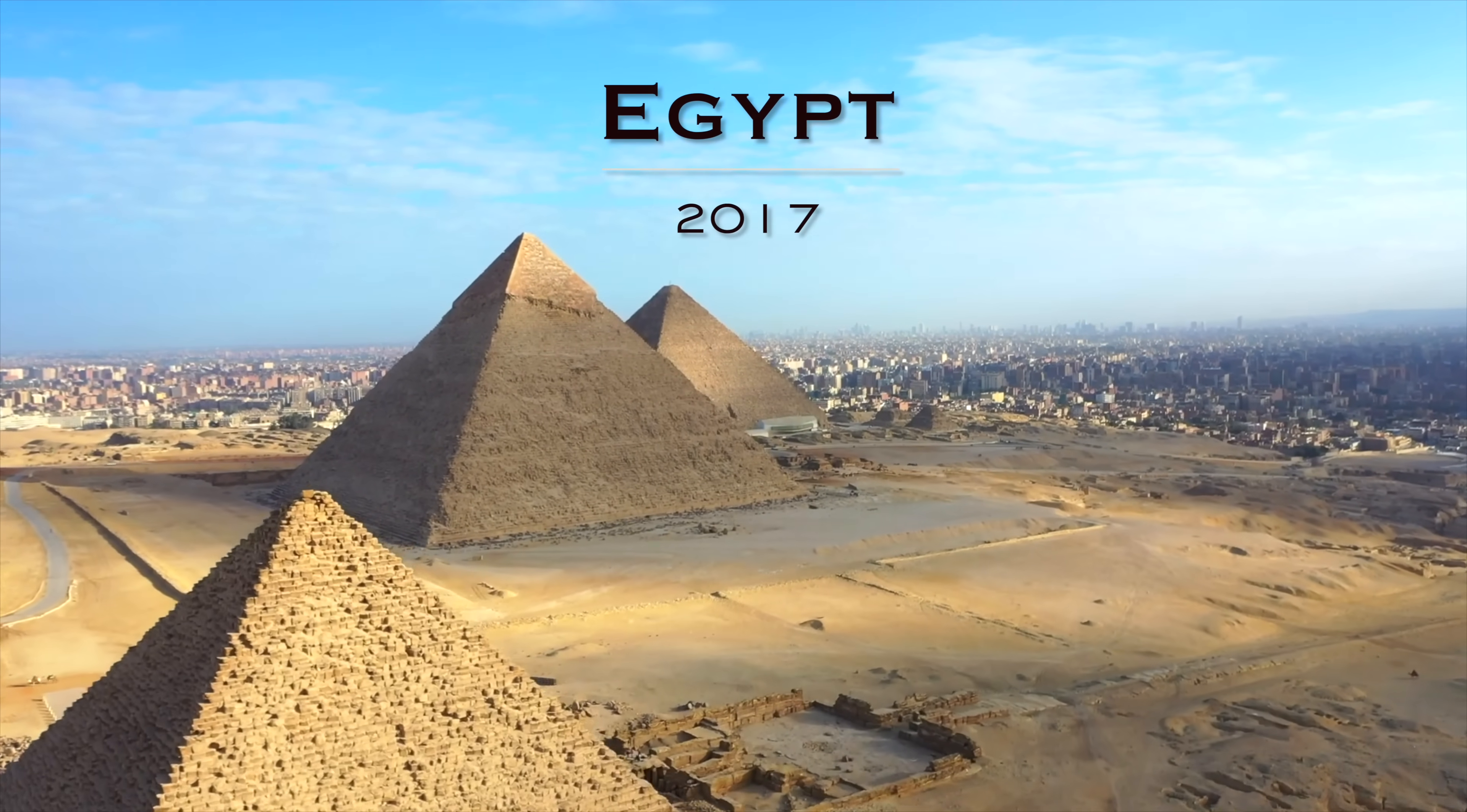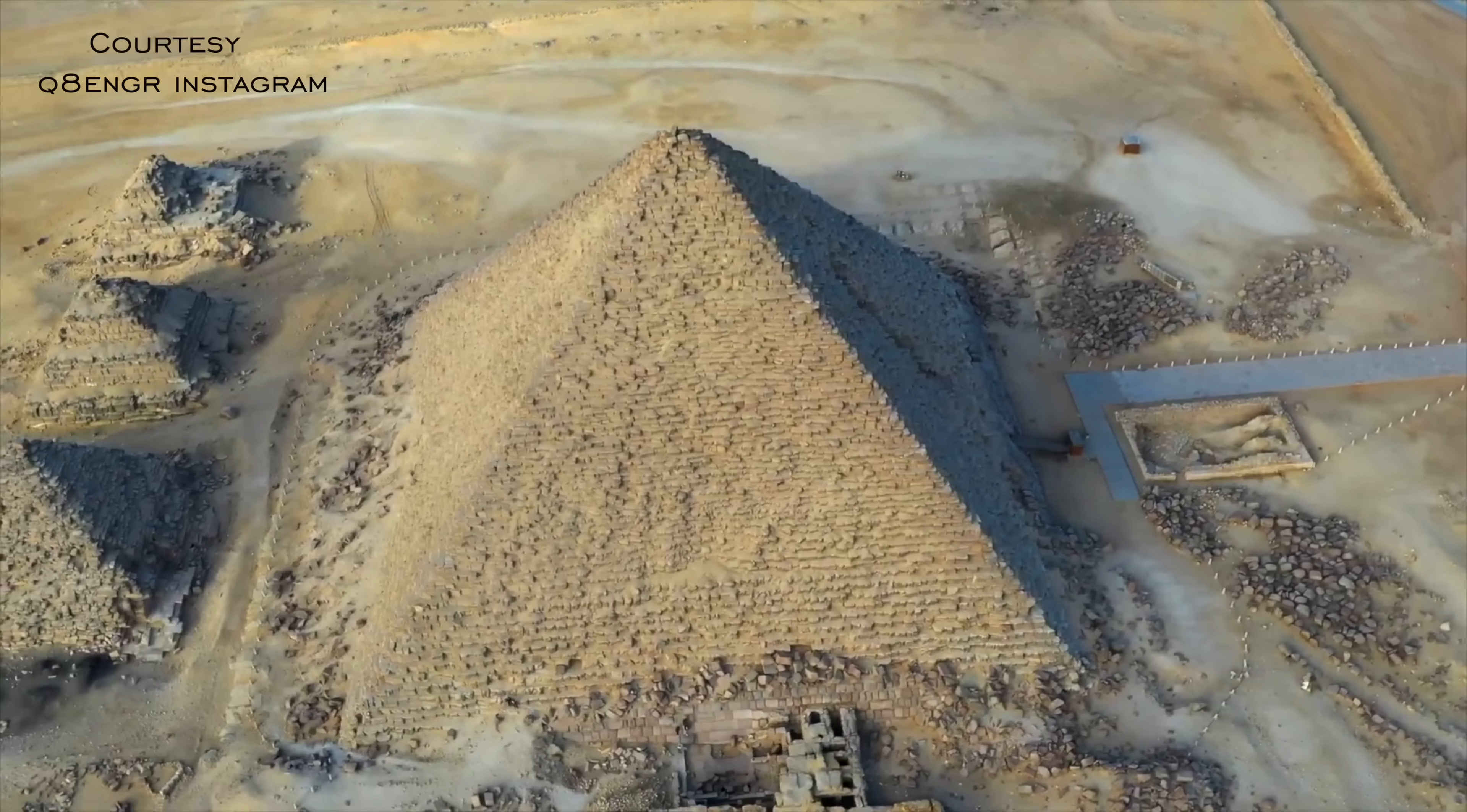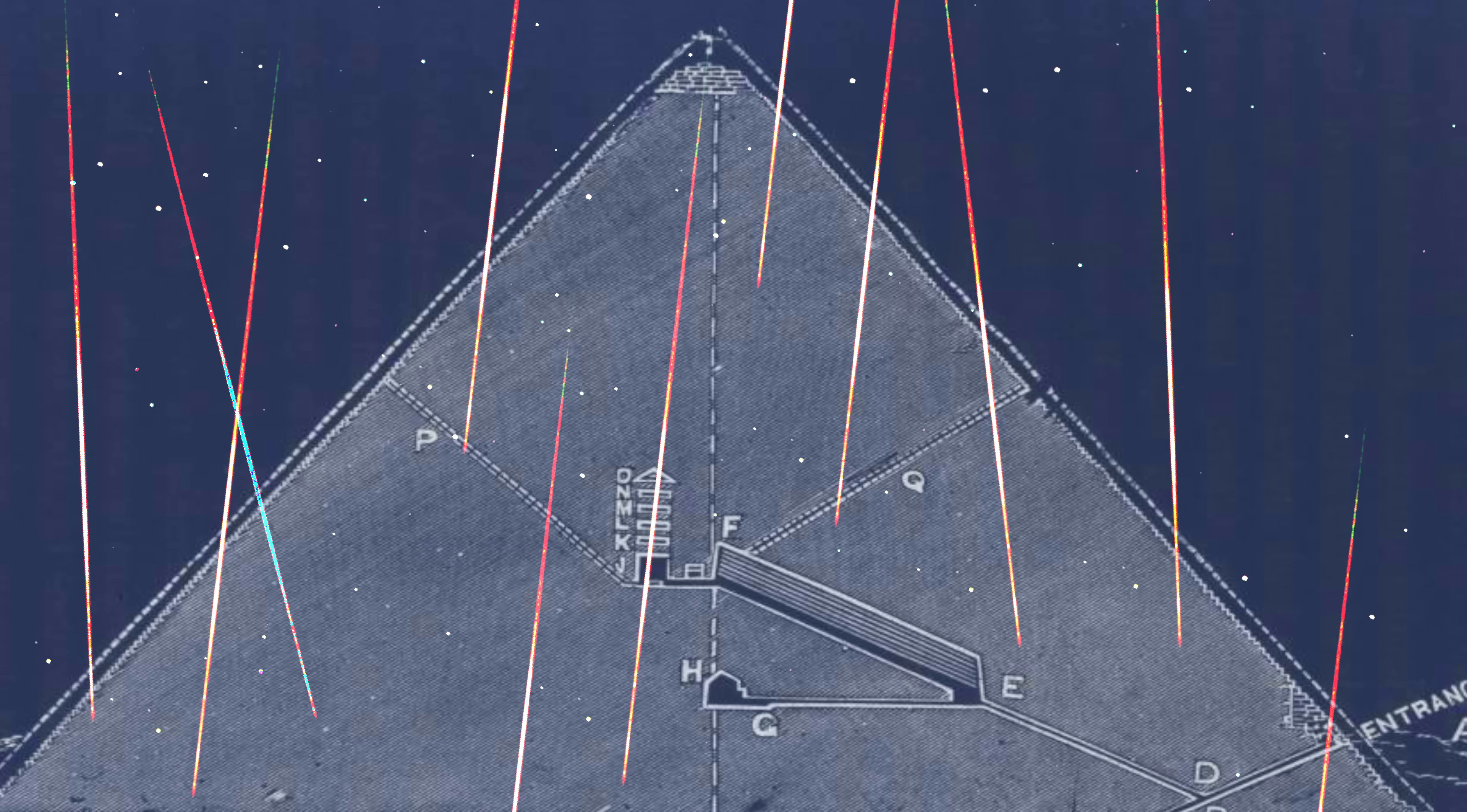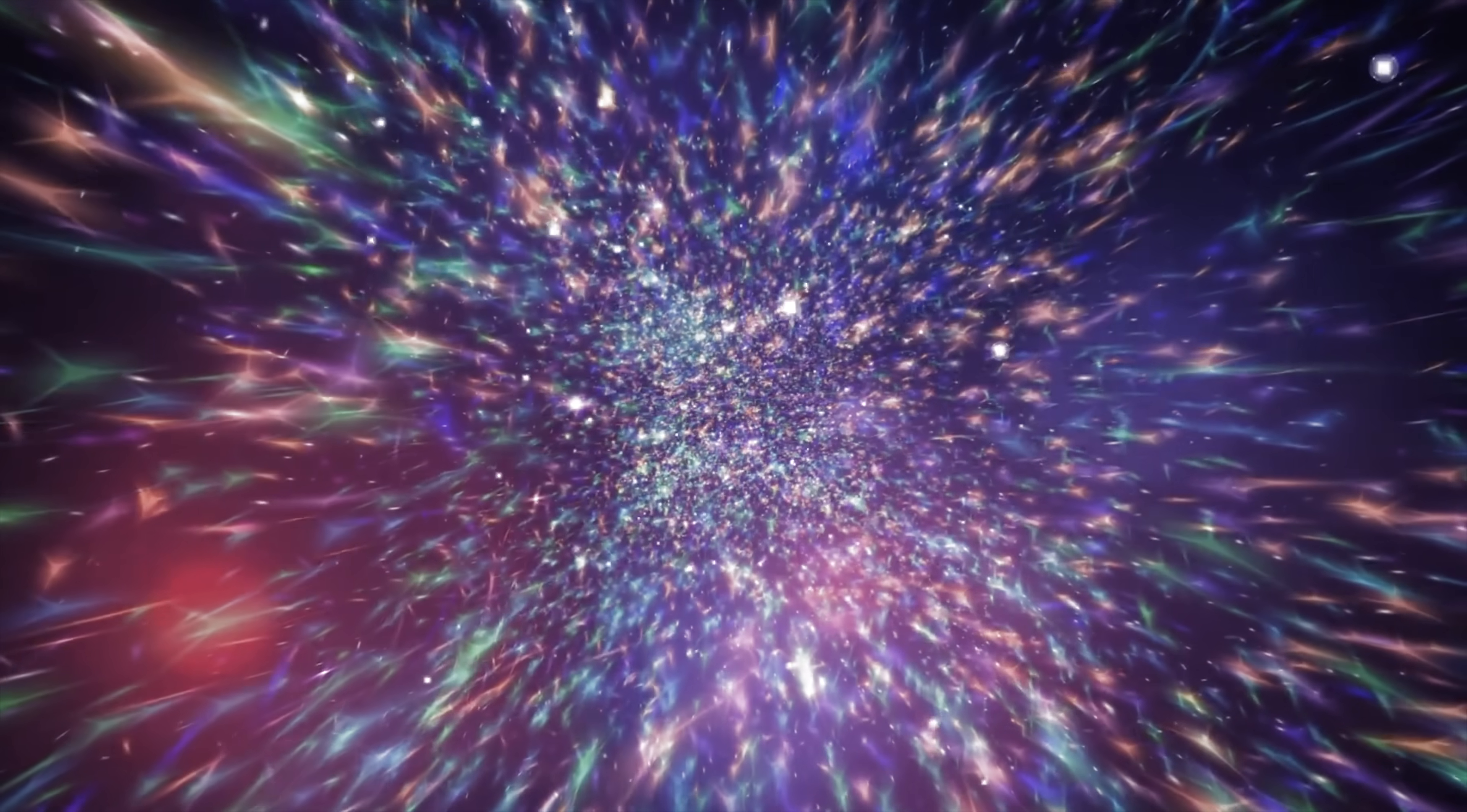Check this out though: in Egypt in 2017, researchers actually discovered a previously unknown chamber in the Great Pyramid of Giza thanks to muons. Using muon detectors, they mapped an area in the pyramid where a greater number of muons passed through the stone, meaning a void. So cosmic rays can be useful.